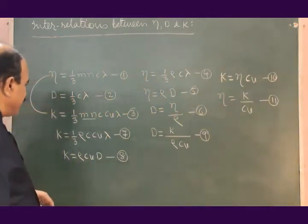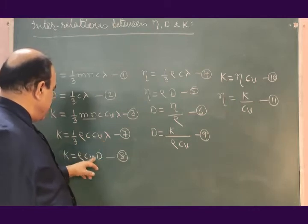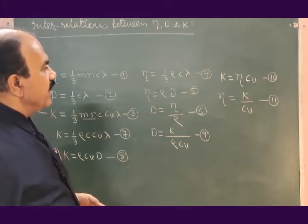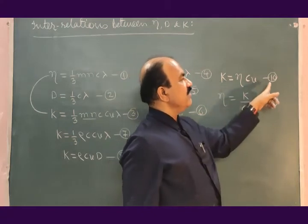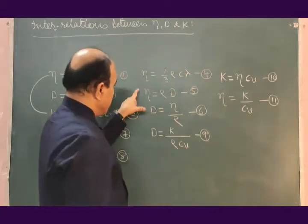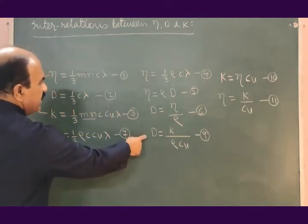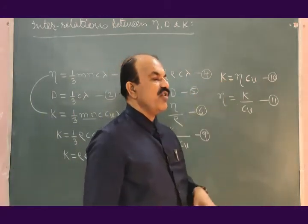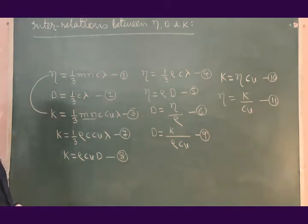So eta = K / cv, equation number 11, or K = eta·cv, equation number 10. It means that if cv and eta are known, K can be found using equation 10. If K and cv are known, eta can be found using equation 11. These two equations are for the relation between eta and K.